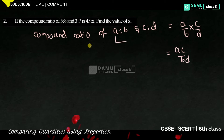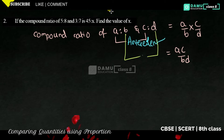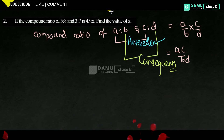So A and C are called antecedents, and B and D are called consequents. The compound ratio is the product of antecedents by product of consequents — antecedents are first terms and consequents are second terms. This is the formula.